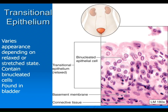Transitional epithelium — I want you to know intellectually that it's found in the bladder and transitions between empty and full states, but I don't need you to be able to recognize it from an image. It's a mess and looks too much like pseudostratified, so I've never asked you to know this one. Don't even worry about it — but this is transitional epithelium found in the bladder.